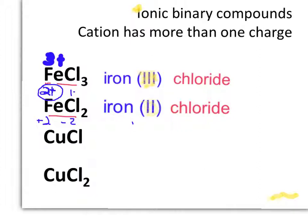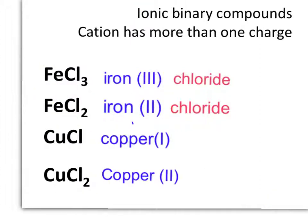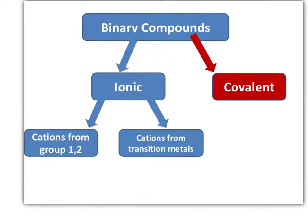That's what the Roman numerals are for. In the next two cases, the cation in the first copper compound has a charge of plus one, and the cation in the second compound has a charge of plus two. The anion in both cases is the chloride ion. So these are copper(I) chloride and copper(II) chloride. So far we've been considering binary ionic compounds where electrons were transferred, and we looked at whether the metal cation is from group one or two, or from the transition metals where it needs a Roman numeral.